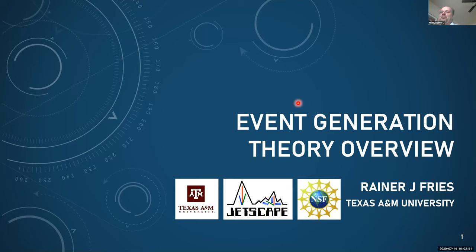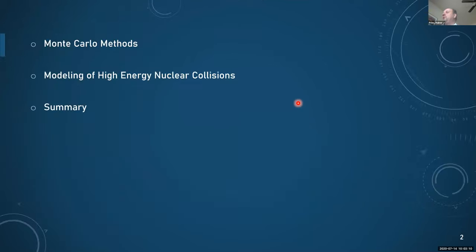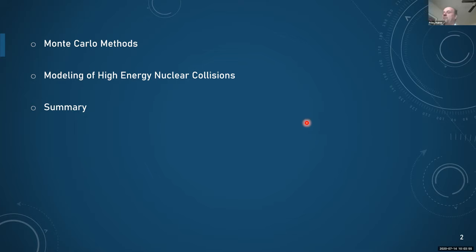I have the task to give a theory overview regarding event generators and Monte Carlo methods. That's a lot to cover, so I'll just try to give you the big picture. There are two parts to the talk and then a summary. I want to spend a little bit of time on the question of why we actually bother building event generators — what is it that we can do that we otherwise maybe cannot do — and why we use Monte Carlo methods for that. Then I want to go specifically to high energy nuclear collisions, which is what JetScape is about, introducing the different aspects, first very general and then circling closer to what JetScape is doing.